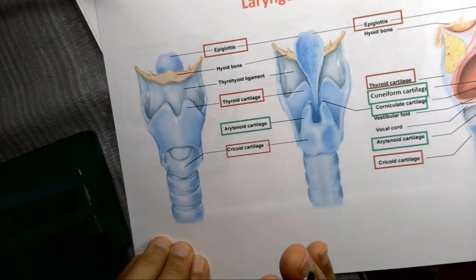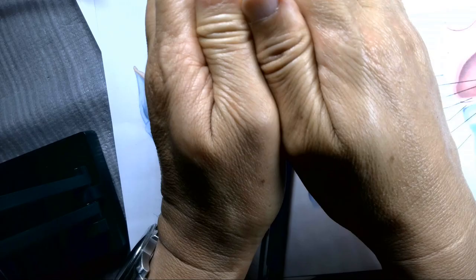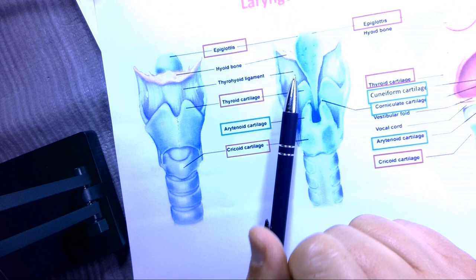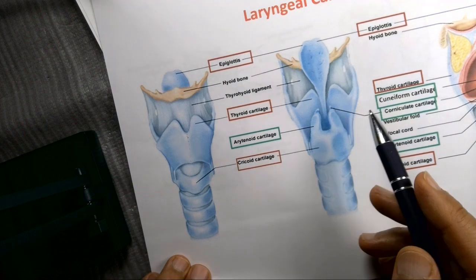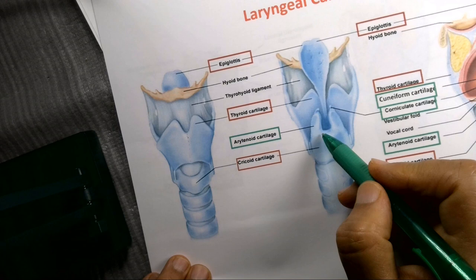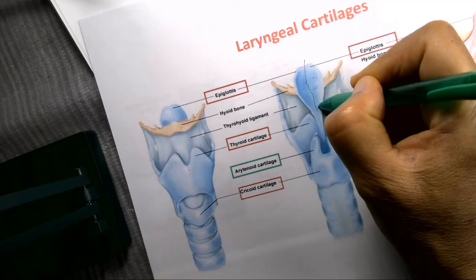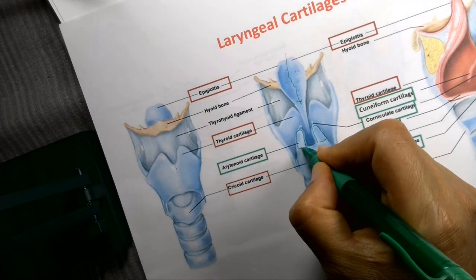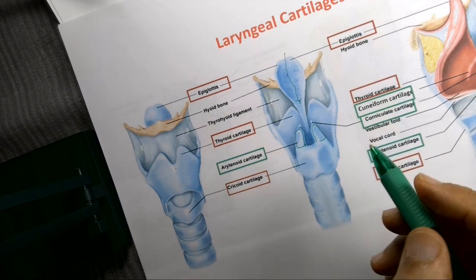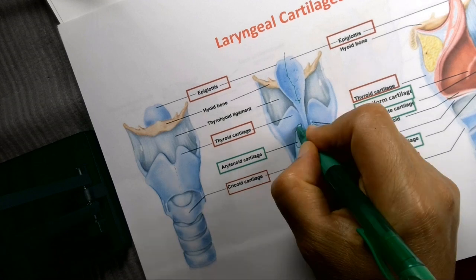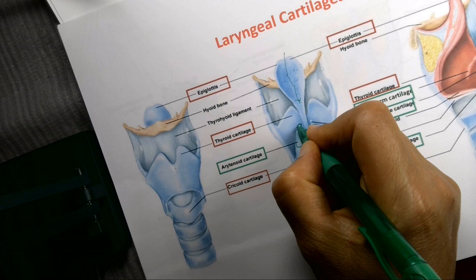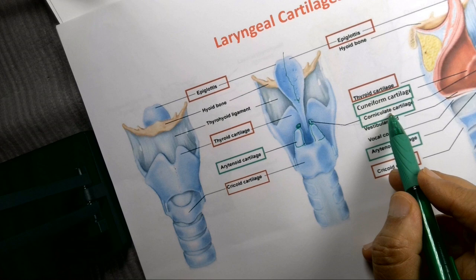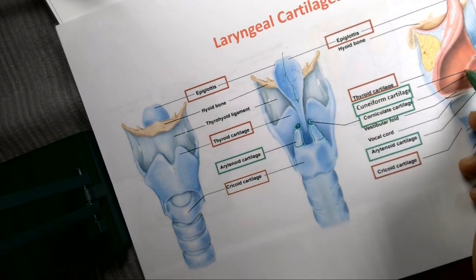Here is the cricoid cartilage from the front and from the back — it becomes wide posteriorly. Here is the posterior surface of the epiglottis, which takes you into the laryngeal cavity. At the cricoid cartilage you will see triangular cartilages on each side — these are the arytenoid cartilages. On top of each arytenoid there is another cartilage called the corniculate cartilage. Then within the aryepiglottic fold you will find the cuneiform cartilage — these are the three paired cartilages.